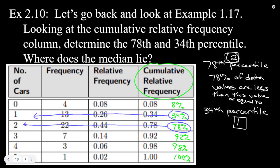For the median: it separates the data into halves, with 50% above and 50% below. Since 34% falls below the second group and 78% falls at the third group, the 50th percentile lies within the second group. Therefore, the median is 2—that is the middle value when all observations are listed in order.